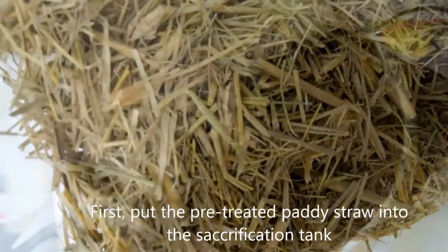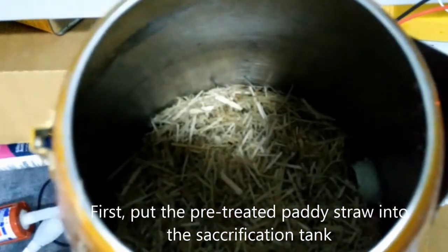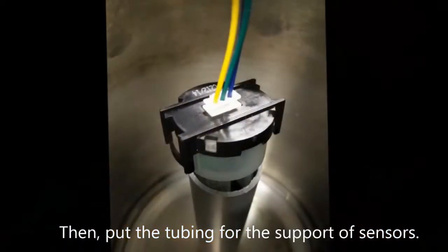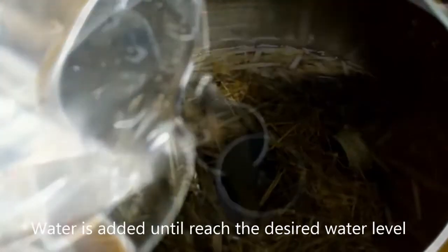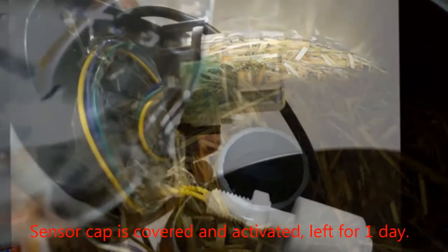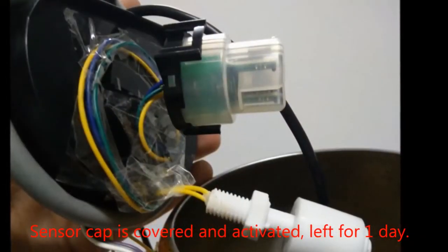First, put the pre-treated paddy straw into the Saccharification Tank. Then put the tubing for the support of sensors. Water is added until it reaches the desired water level. The sensor cap is covered and activated, left for one day.